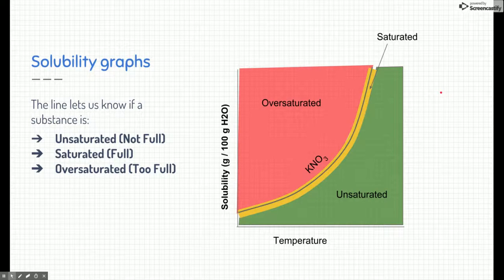Now this line represents saturation. And so we're going to look at the three different parts. If we reached a point underneath the line, that's unsaturated, or it's not full. If we hit the line itself, which is kind of the goal, that's saturated, meaning it's full. If we are over the line, that is oversaturated, or we're too full. So let's take a closer look at what those three terms mean.